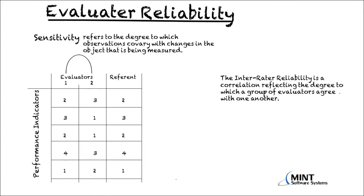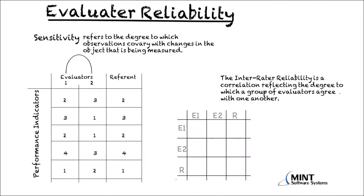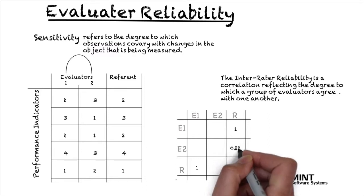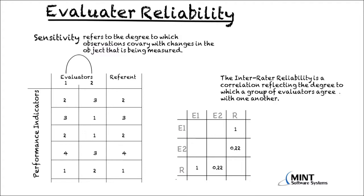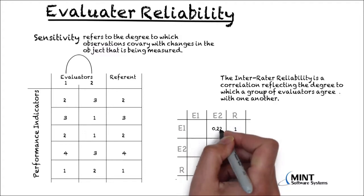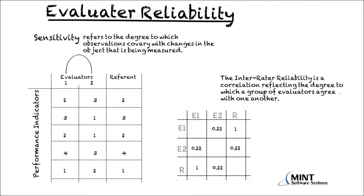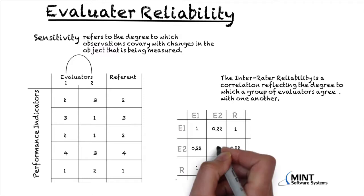We would like to have an overview with the correlation coefficients between all the evaluators and the referent. In this matrix, we note all correlation coefficients — each value is entered twice. We note the rater-referent reliability between the referent and evaluator 1, then evaluator 2, and the inter-rater reliability between evaluators. Because the correlation of an evaluator or referent with themselves is always 1, that is noted on the diagonal.